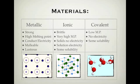Here's the first page for our summary on bonding. You can see we have metallic here, ionic here, and covalent. This is to do with the properties and a quick image of what they look like.